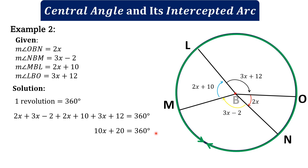Applying the additive inverse, we subtract 20 from both sides to get 10x = 340, then divide both sides by 10. Therefore x = 34.